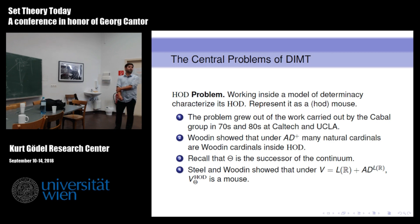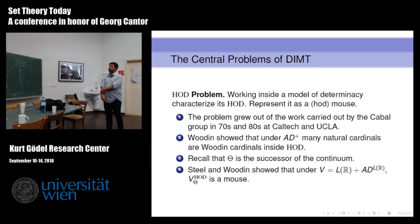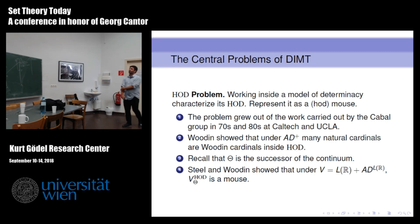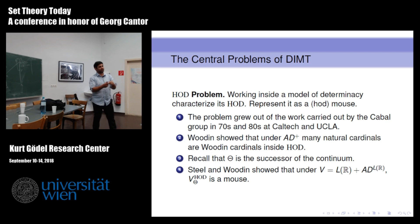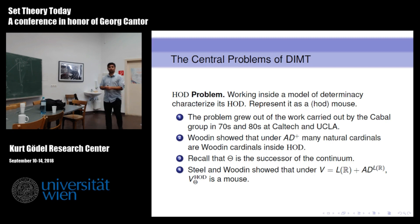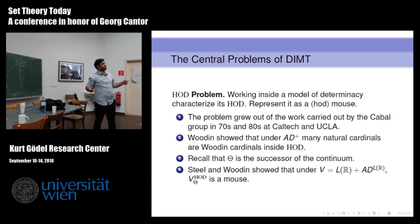All that work culminated in the 1990s when Woodin showed that if you assume V = L(ℝ) and AD in L(ℝ), then HOD - specifically V_Θ of HOD, where Θ is the successor of the continuum - is actually a mouse. So it satisfies GCH, it has diamond, it has square, and moreover Θ itself is a Woodin cardinal in HOD. The classical approach was giving you a procedure that you had to go through and prove converges - there was no model to begin with. In the descriptive approach, HOD is the model: you try to prove that HOD has the large cardinals. So you have the model and try to prove it has the large cardinals you want - the reverse of the classical case.